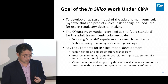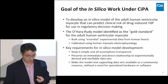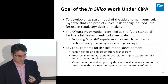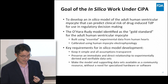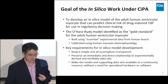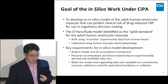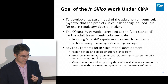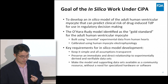The Ohara-Rudy model, which is one of the many models of human cardiomyocytes that's published, was identified as the gold standard for the adult human ventricular myocyte. This was decided back in 2013 when the panel of experts met at FDA. The reason was that this model was built using essential experimental data from human hearts and calibrated using human myocyte electrophysiology, versus many models published that used animal data.